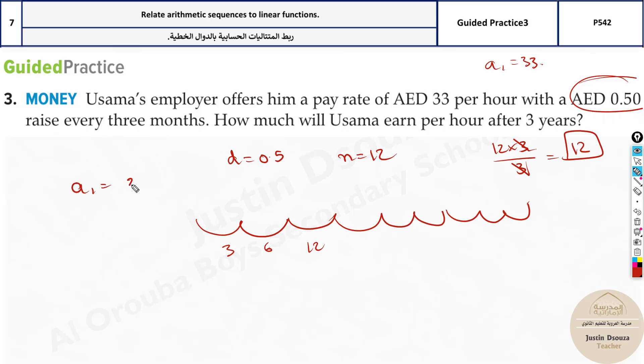So a1 will be 33.5. You can even try counting it. This will be a1, after a12 will be 3 years, at the end of 3 years. So this is it. These are the given.